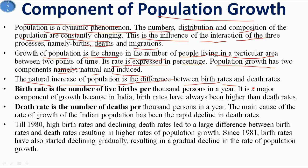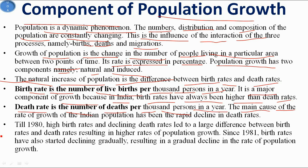Birth rate is the number of live births per thousand persons in a year. It is a major component of growth because in India, birth rates have always been higher than death rates. Death rate is the number of deaths per thousand persons in a year. The rapid decline in death rate — due to improvement in medical facilities, transport, and infrastructure — has been the main cause of India's population growth. Till 1980, a high birth rate and declining death rate led to a large difference between the two, resulting in high population growth.